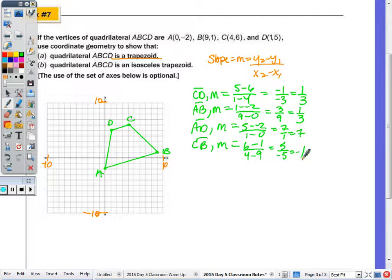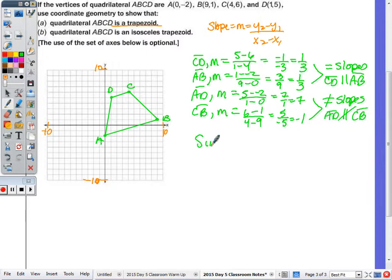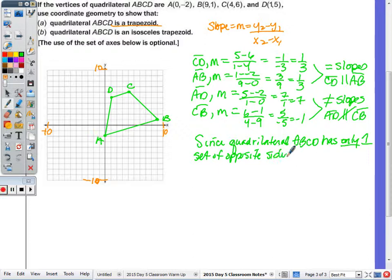Once you have your calculations, it's always good to verify them with your graph. That's why we do the graph, even though it says it's optional. Because CD and AB have equal slopes, that means CD is parallel to AB. And because these are non-equal slopes, that means AD is not parallel to CB. And since quadrilateral ABCD has, again, only one set of opposite sides parallel, it is a trapezoid.